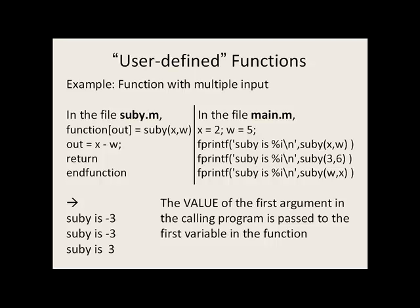Here's one example with a function that has multiple inputs. We have a program called main.m, and it's going to call a function subby three times. This function is stored in subby.m. Going to our program main.m, we have x equals 2, w equals 5. We have an fprintf statement that says subby is percent i.